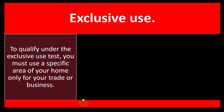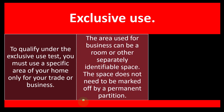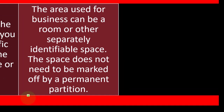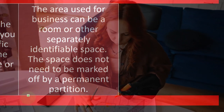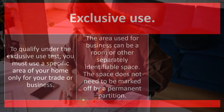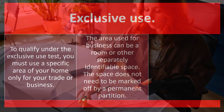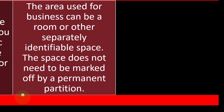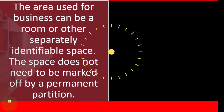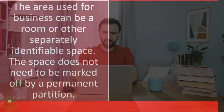Exclusive use: to qualify under the exclusive use test, you must use a specific area of your home only for your trade or business. The area used for business can be a room, shop, or other separately identifiable space. This gets tricky — if you dedicate an entire room just to business, that's straightforward. But if you have an open home and need to designate part of it, you can still do so. The space does not need to be marked off by a permanent partition.